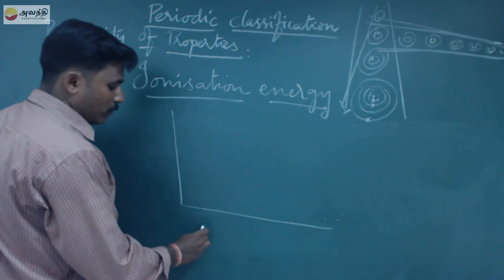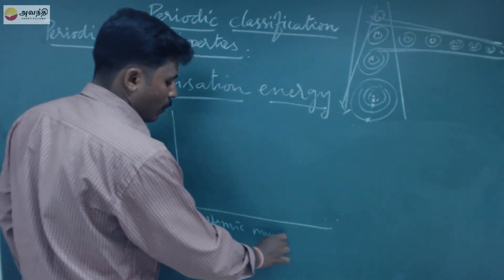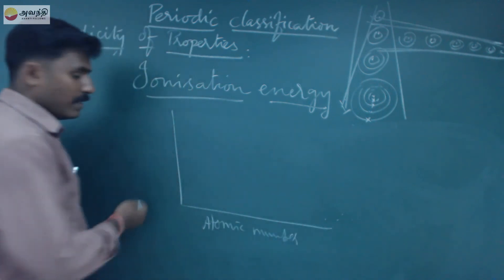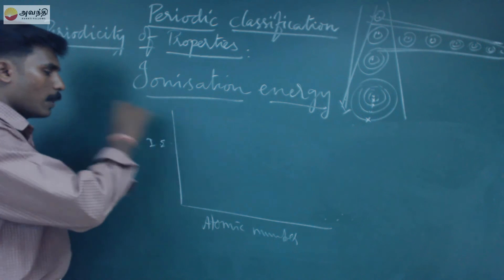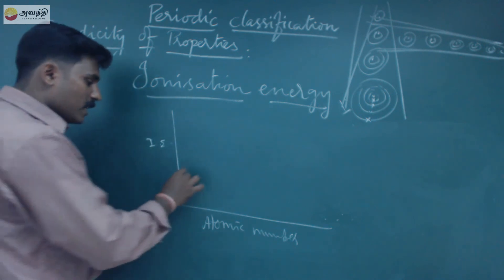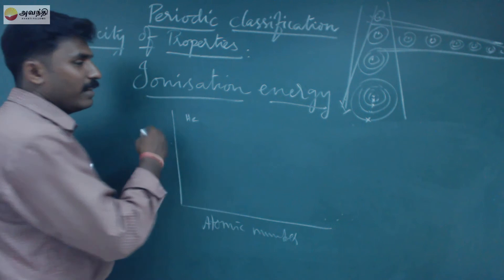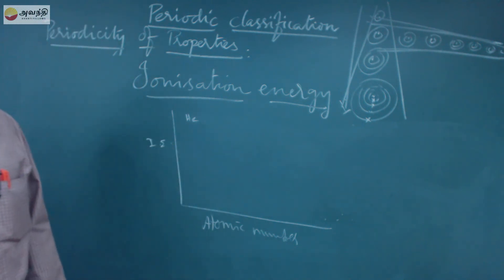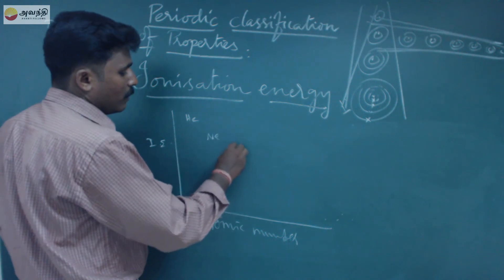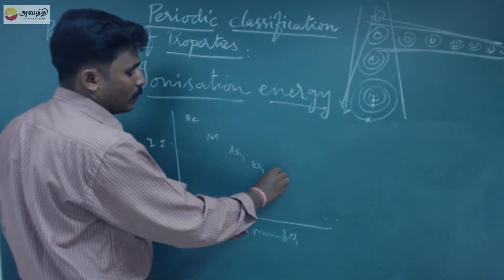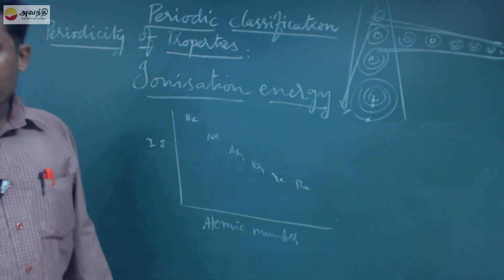This graph shows atomic numbers on the x-axis and ionization energy on the y-axis. Looking at helium, neon, argon, krypton, xenon, radon — these inert gases show the highest peaks in ionization energy on the graph.